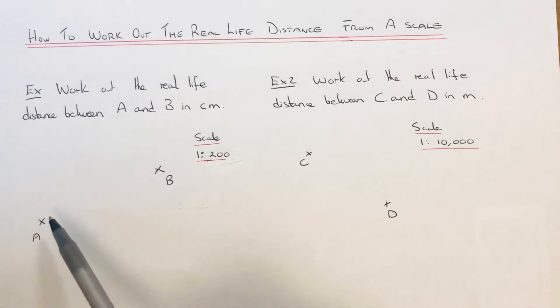We've got to work out the real-life distance between A and B and give our answer in centimeters. The scale on our map is 1 to 200, so this means one unit on our map is 200 units in real life.